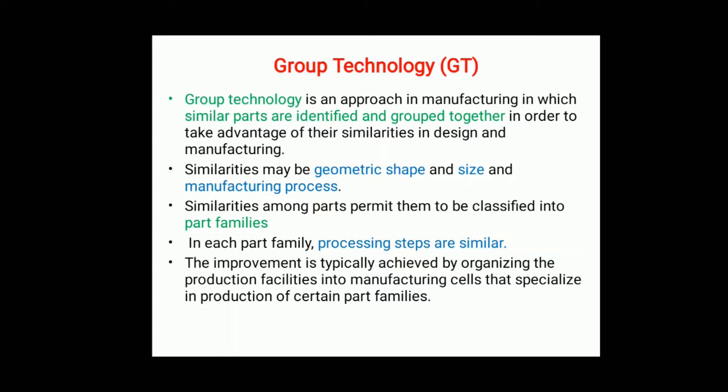From the group, we divide further into part families, where each part family has similar processing steps. A part family can be defined as a group of parts or components having the same or identical attributes. Parts may not be exactly the same but are very close. Parts may not look the same but their manufacturing process can be the same. This involvement is typically achieved by organizing production facilities into manufacturing cells that specialize in producing certain families.